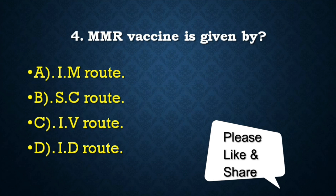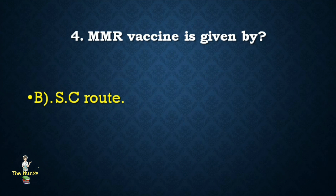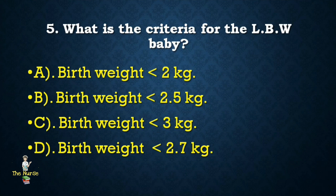Next question: MMR vaccine is given by which route? Options: intramuscular route, subcutaneous route, intravenous route, intradermal route. Correct answer is subcutaneous route.